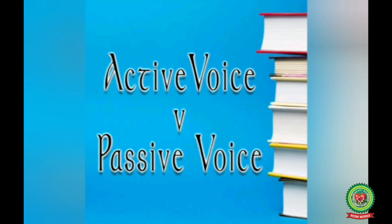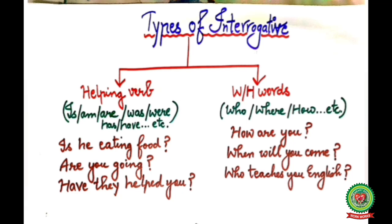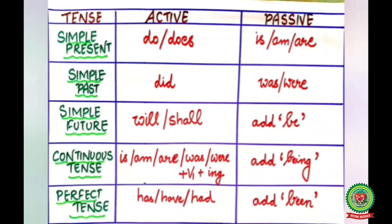Now first we will discuss types of interrogative. Interrogative sentences are of two types: the first starting from a helping verb and the second starting from WH words. For example, 'Is he eating food?', 'Are you going?', 'Have they helped you?' — all these questions start from a helping verb. And 'How are you?', 'When will you come?', 'Who teaches you English?' — all these start from WH words.